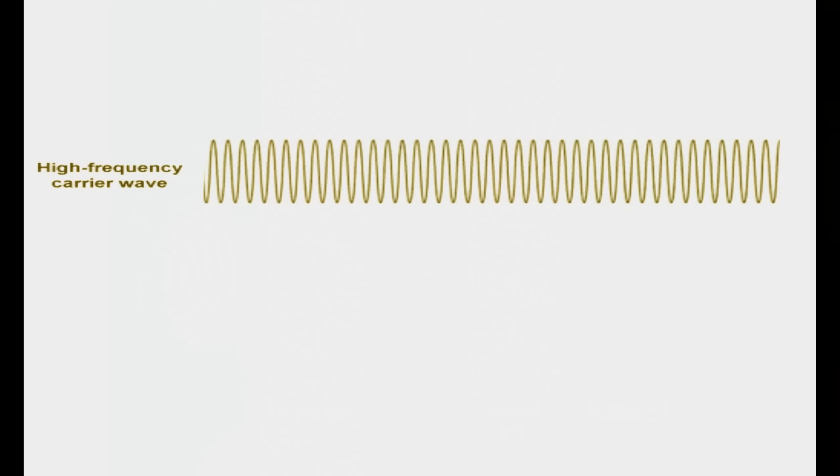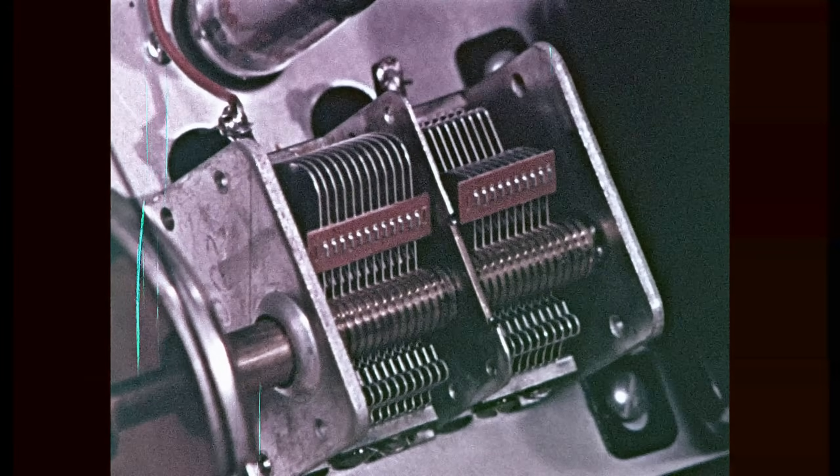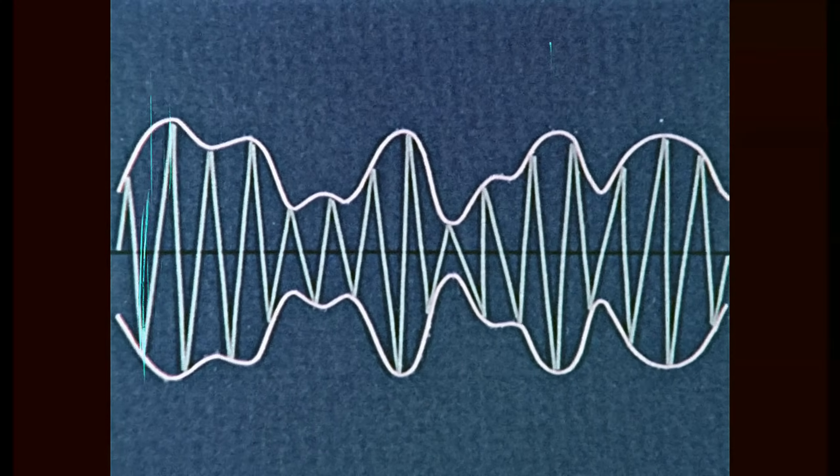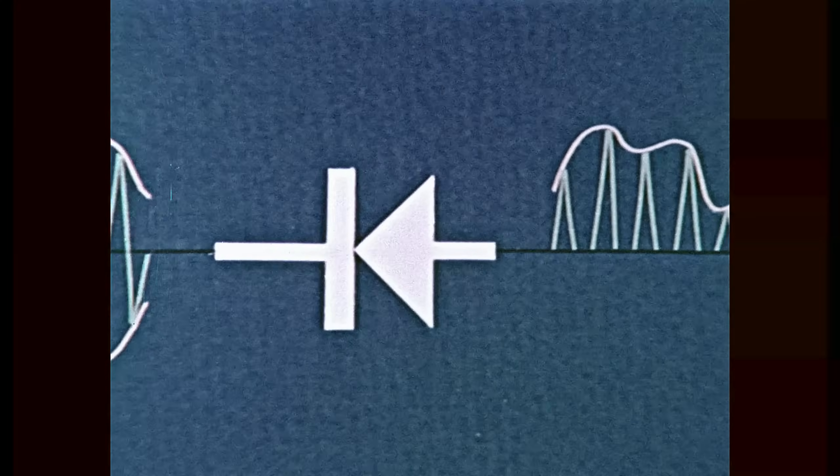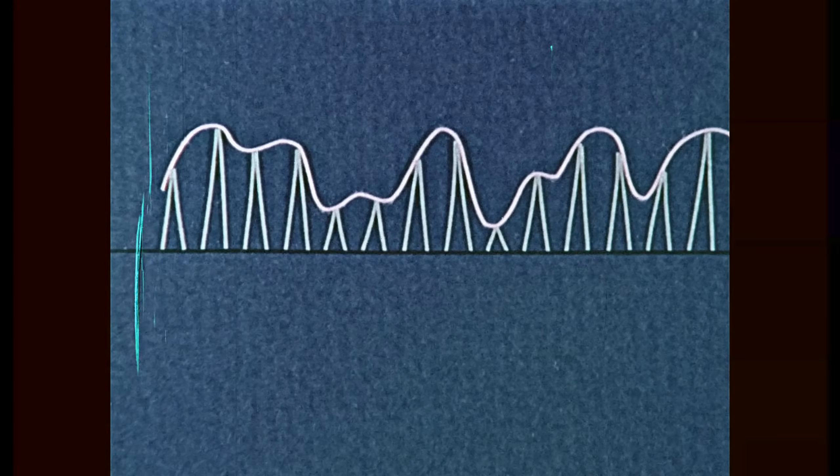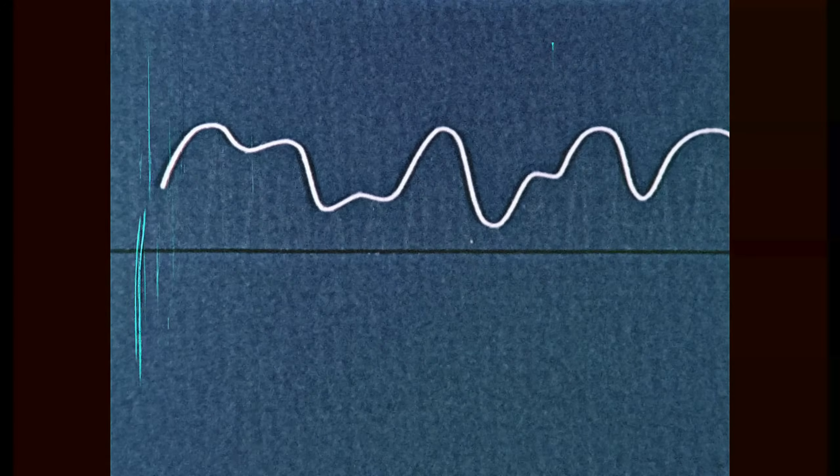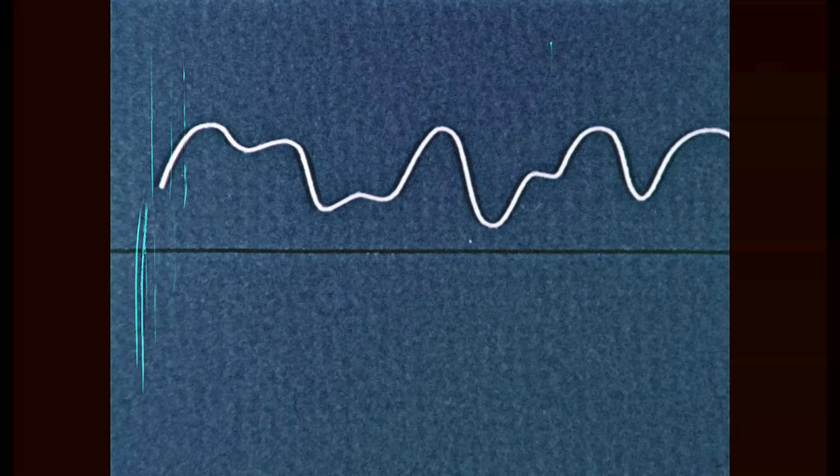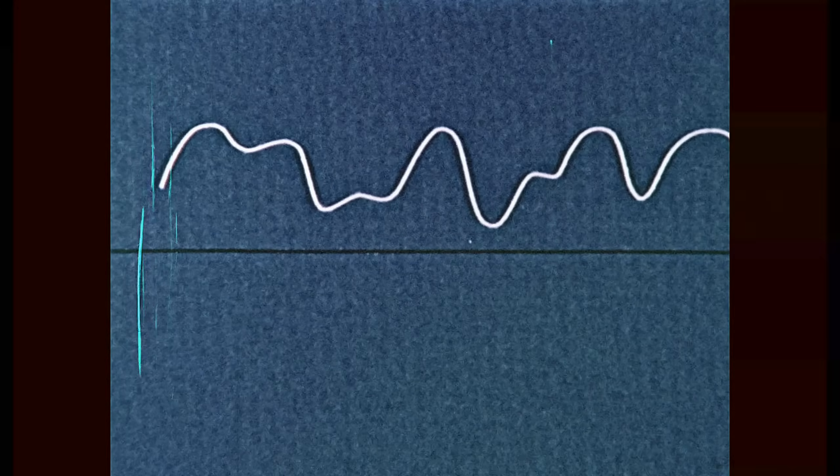The receiver's antenna circuit is tuned to one of the many high-frequency carrier waves broadcast by the stations. In a simple type of receiver, this signal is fed to a diode tube or transistor, a rectifier passing only half of the modulated carrier wave. The carrier frequency is removed by a filter circuit, leaving a varying direct current corresponding to the audio waves produced at the broadcasting station.